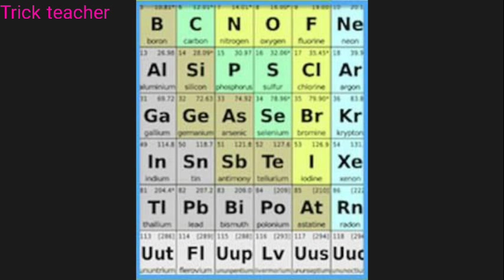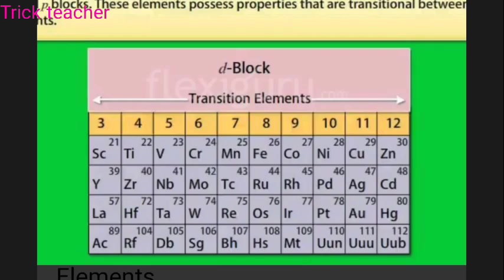Now we are going to the D-Block elements. We are going to cover 30 elements here. The D-Block elements have the outermost electronic configuration. We will go through them row by row.